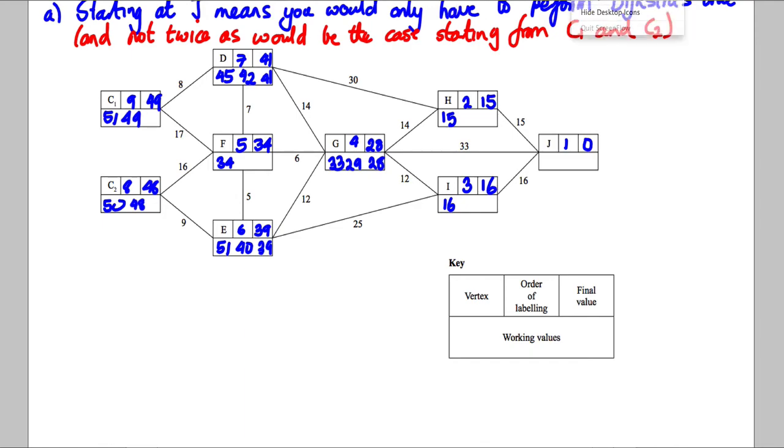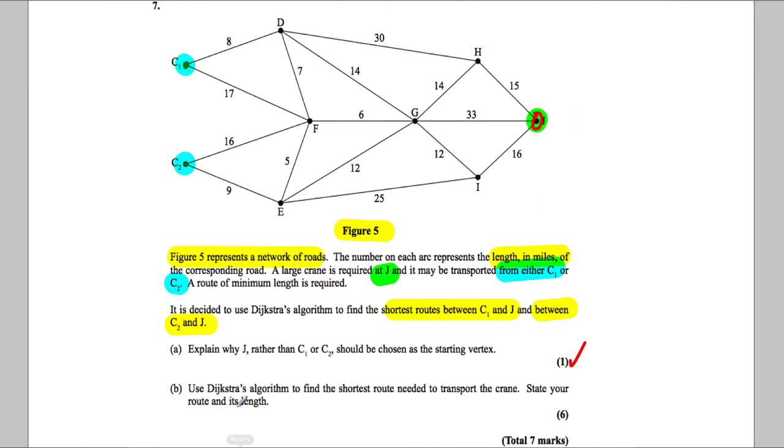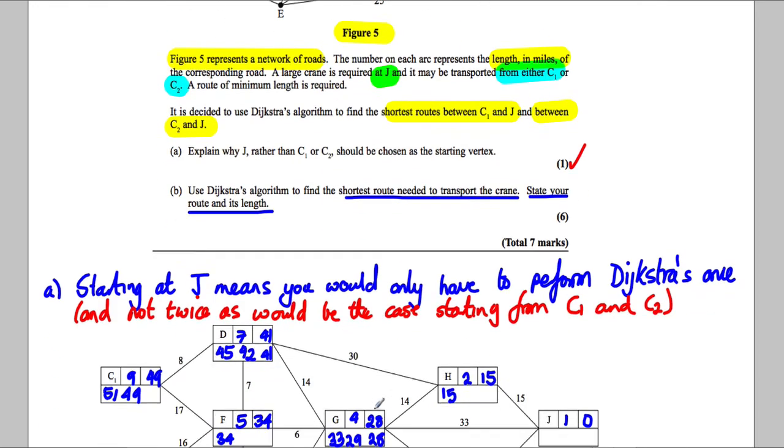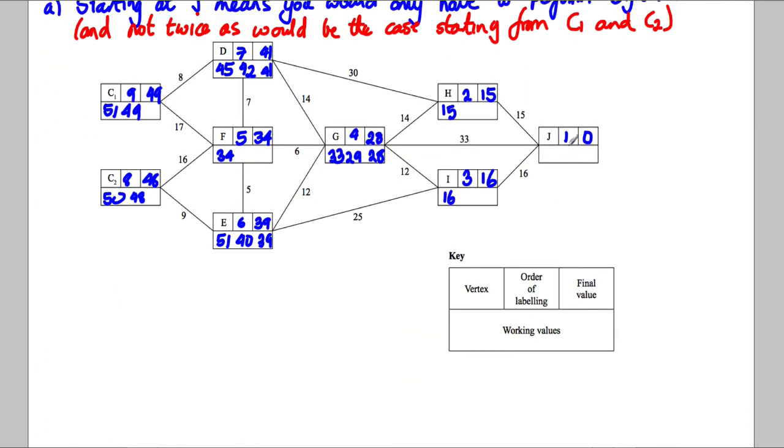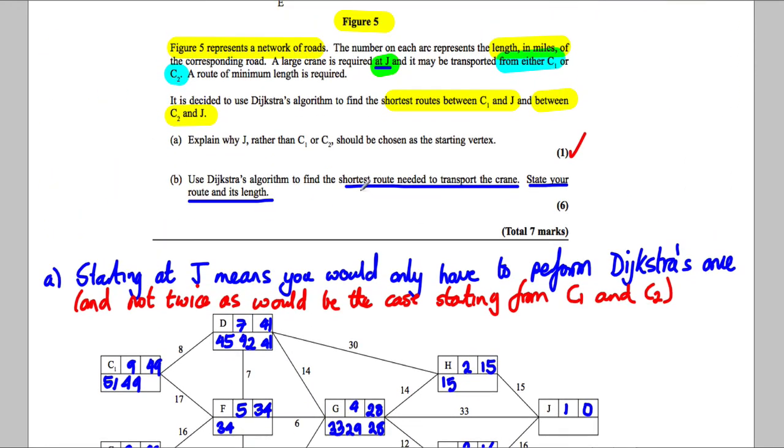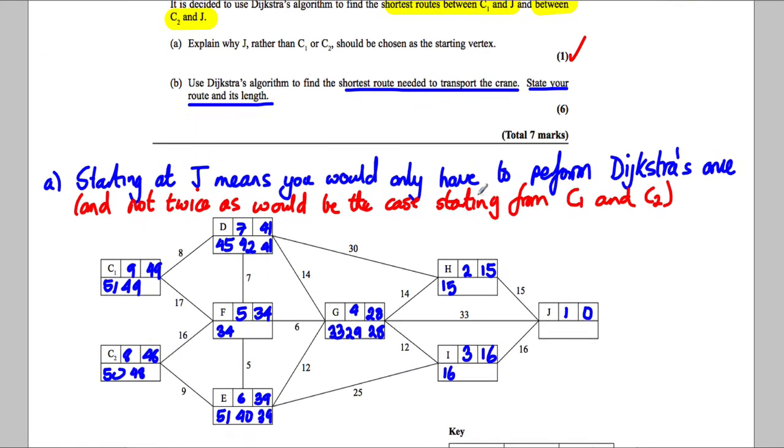The Dijkstra's algorithm is complete. It says find the shortest route to transport the crane and state your route and its length. Let's be super careful here. Remember we wanted to deliver the crane to J. Because from J to C2 is the shortest at 48, we're going to start from C2.